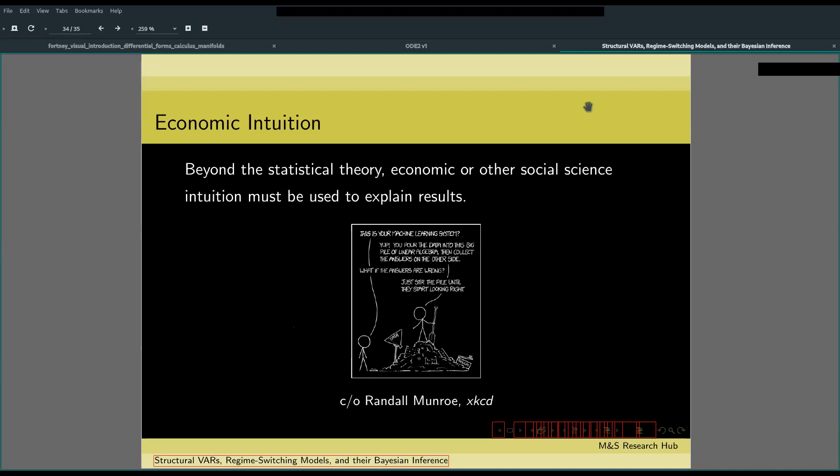Beyond statistical theory, economic intuition must also be used to explain results. It's very useless to just estimate SVARs everywhere if no interpretations can be made using some sort of theoretical framework. That's why, aside from checking diagnostics and the like, economic theory is very useful in interpreting estimation results.